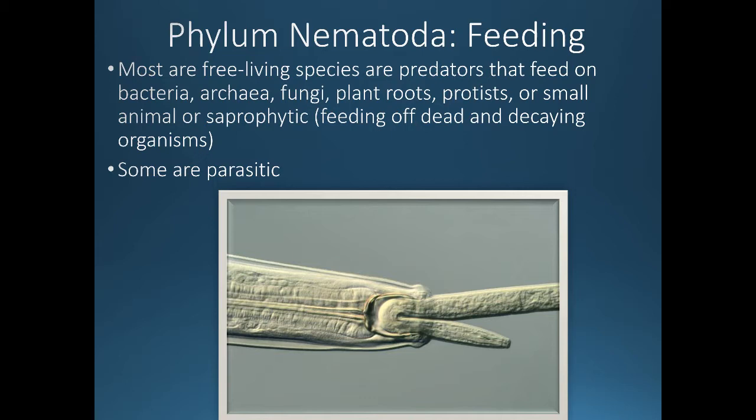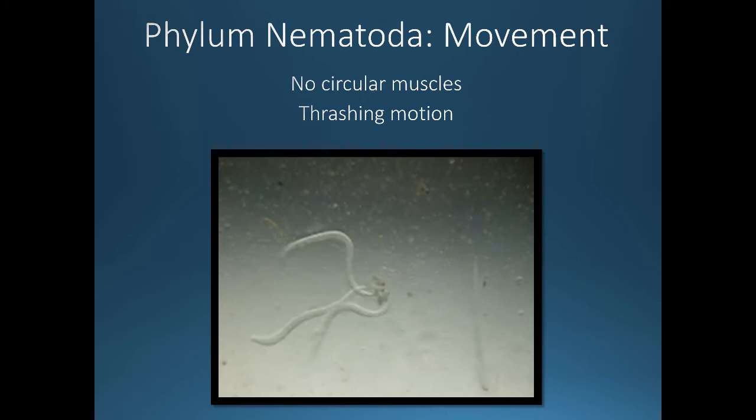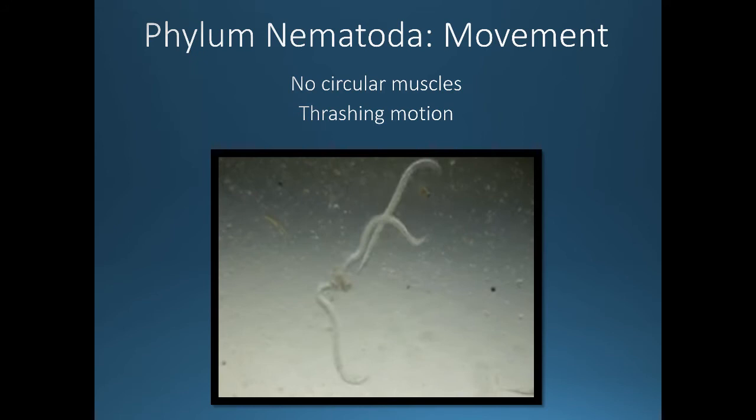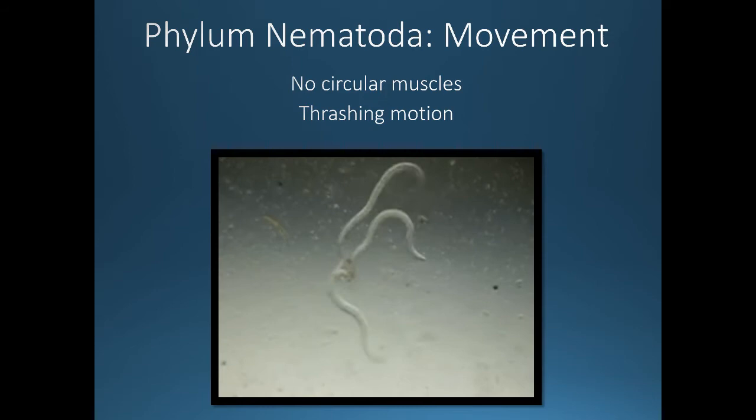Nematodes don't have circular muscles, so they don't move the same way as segmented worms. Instead they have a thrashing motion. In this video they don't seem to move very fast because they're in a liquid suspension, but when they're on a solid surface they can move quite well.